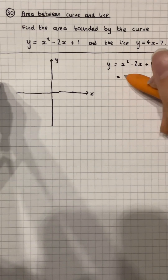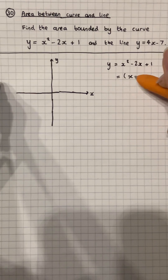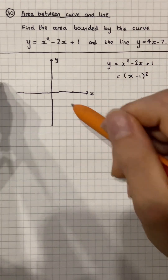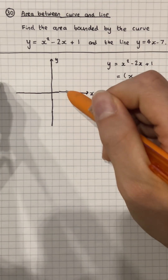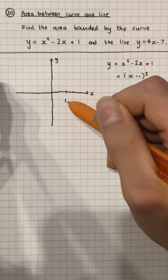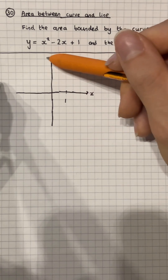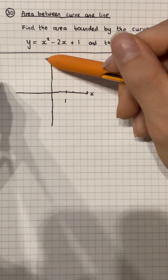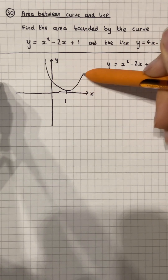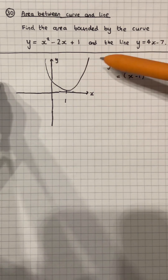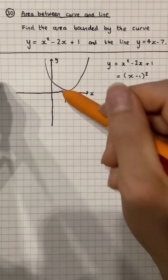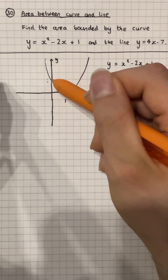Let's draw our axes and rewrite the curve so it's easier to plot. There's one root and it's going to be at 1, and it's a positive quadratic so it's going to come down like a smiley face. The last term of the quadratic is 1, so we know it's going to pass through there.